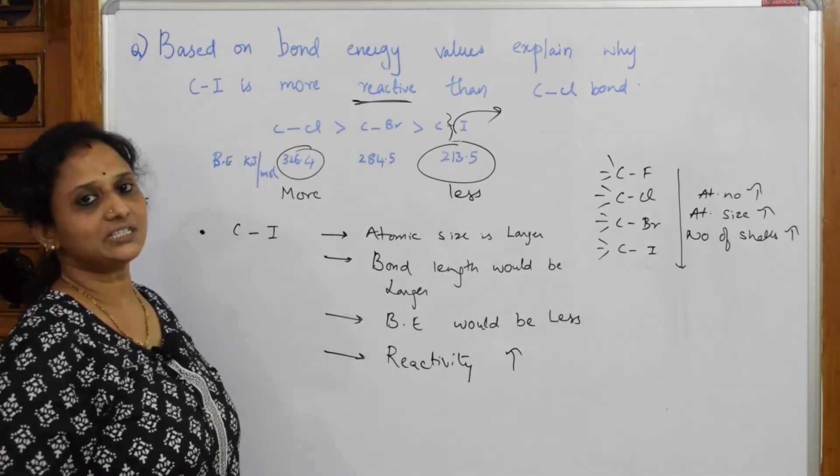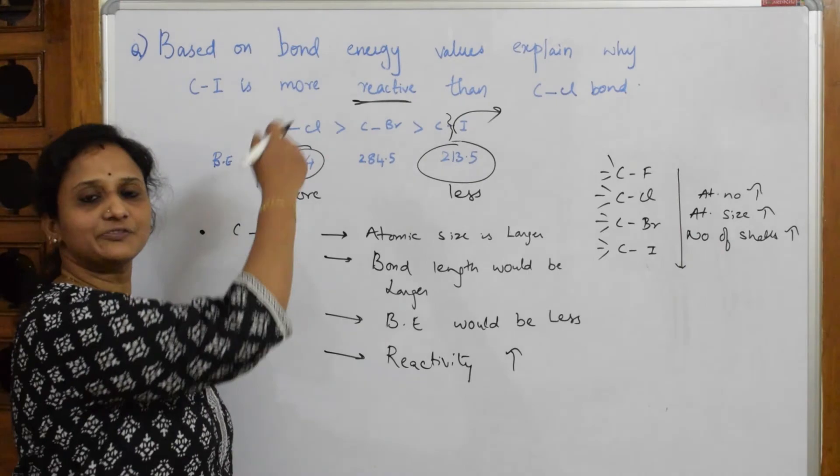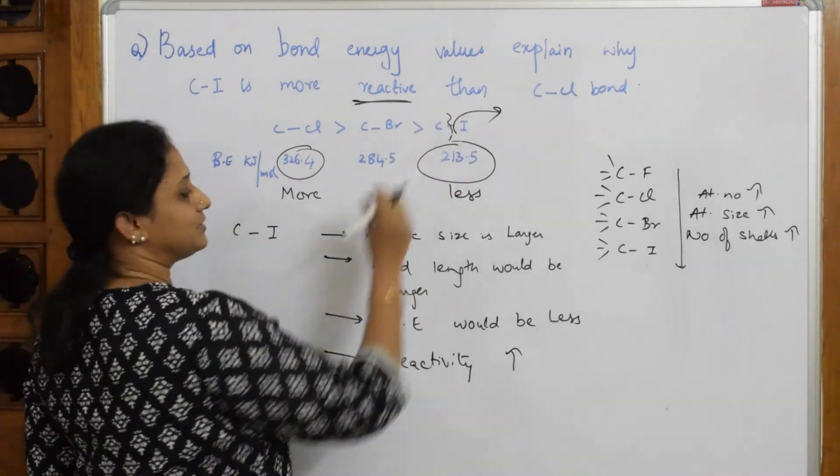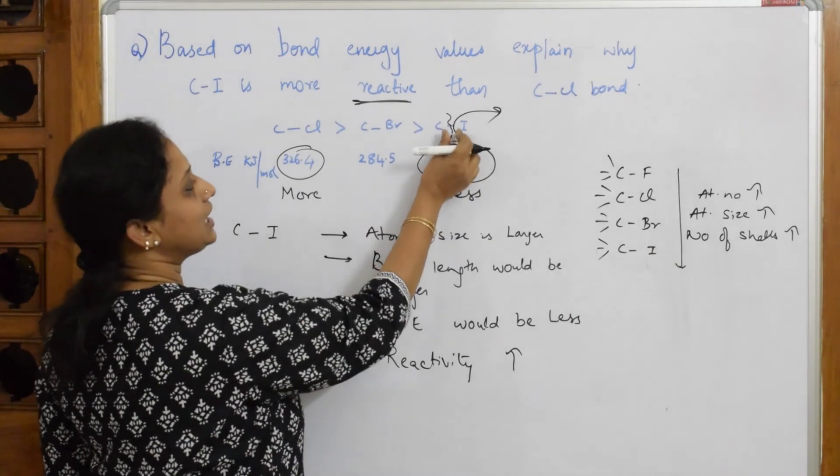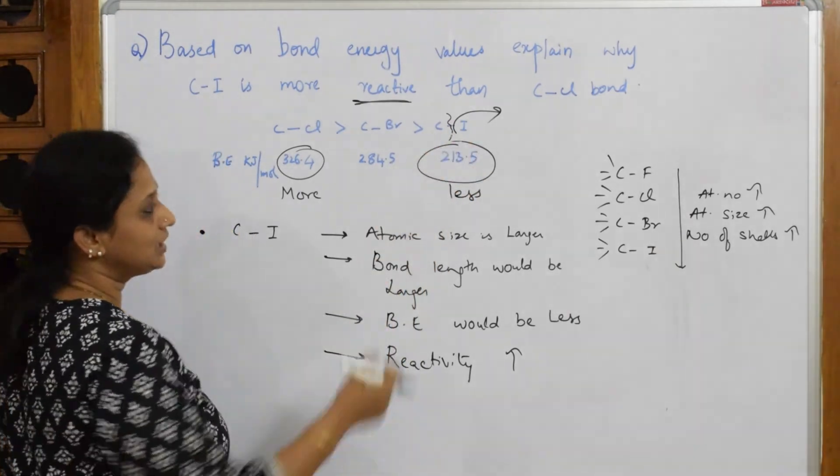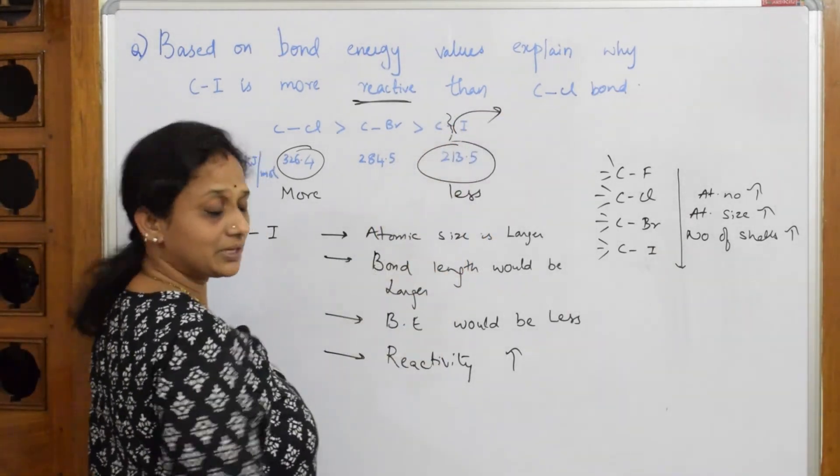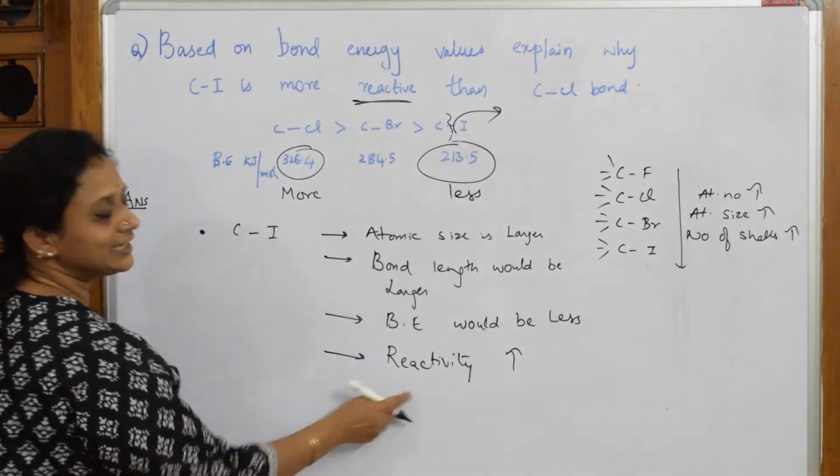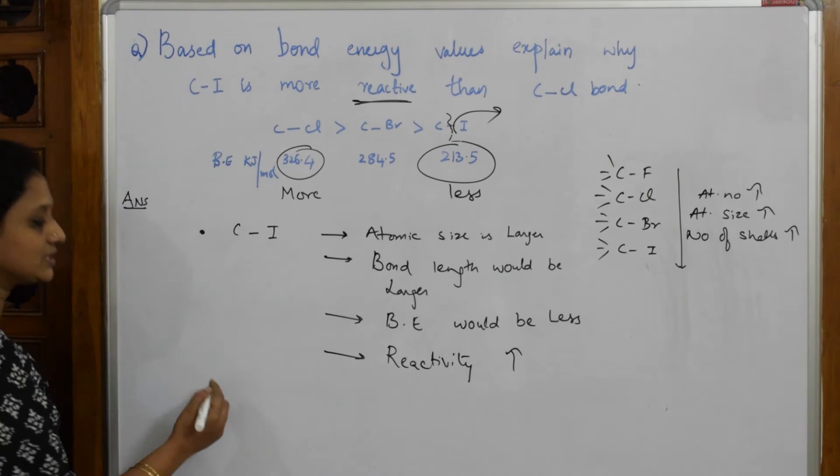Automatically we say the reactivity increases. When the reactivity increases, are we not justifying the question given to us? Yes. So atomic size larger, bond length would be larger. So the distance is larger. When the distance is larger, I can easily break this bond, so bond energy would be less. And the bonding is less, reactivity automatically increases.